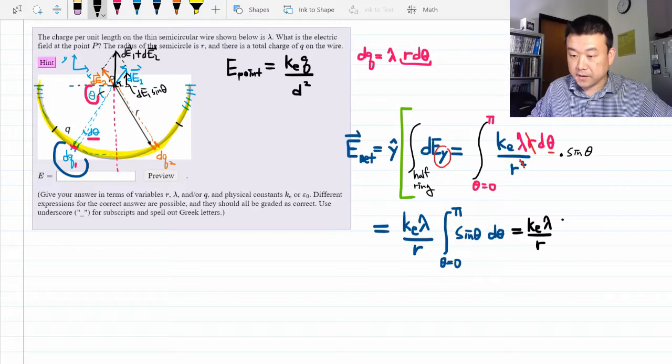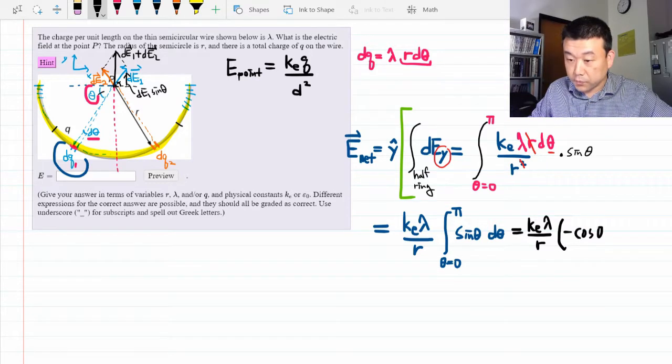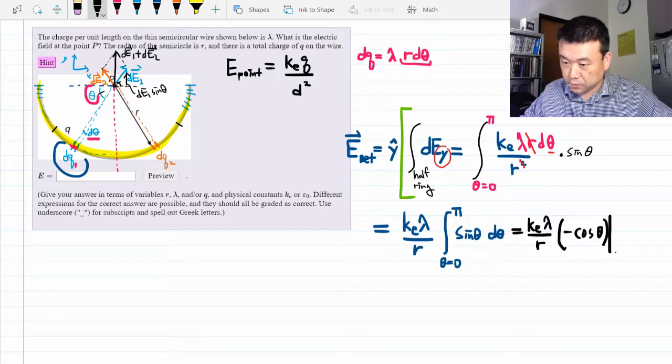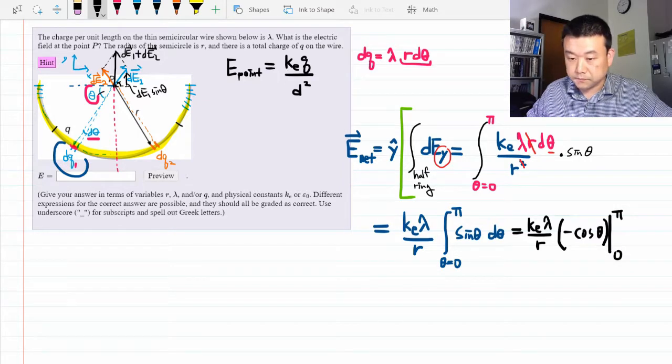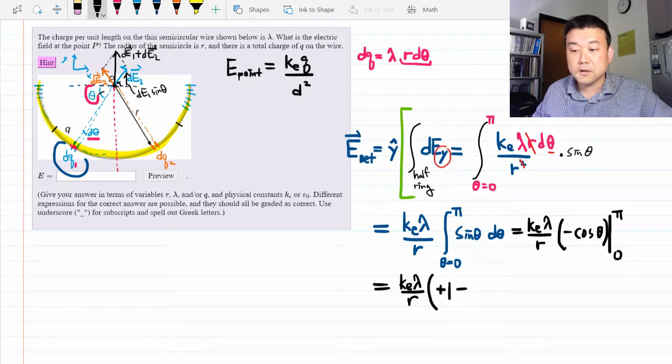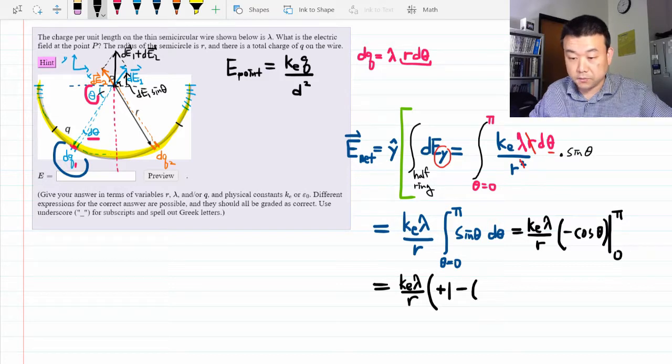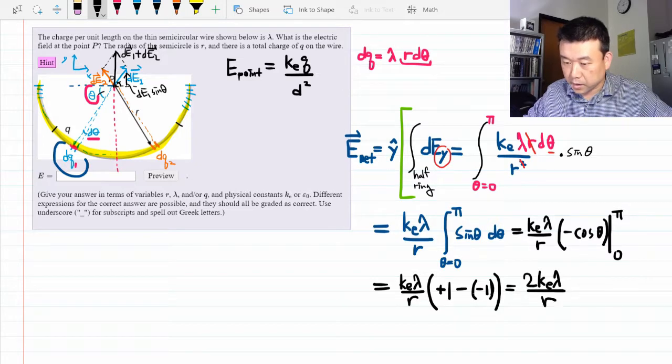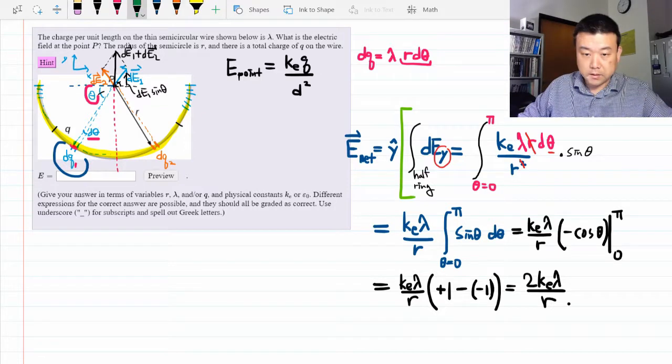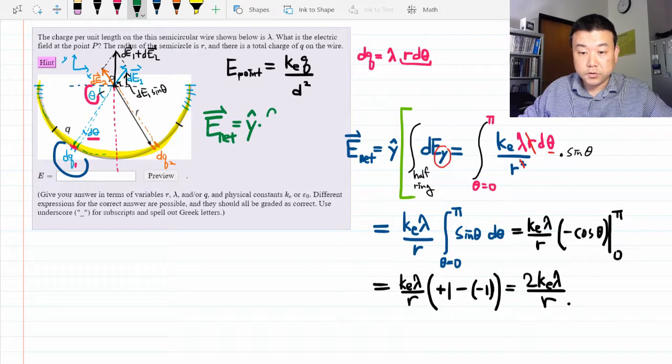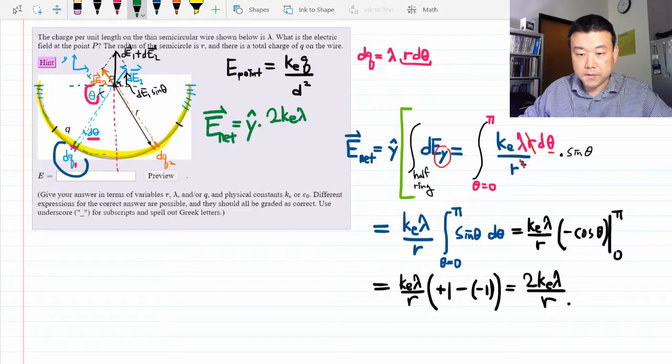The antiderivative of sine is minus cosine. You can always double check your antiderivative by taking the derivative. See if you get the same thing back. And the limits go from 0 to pi. So evaluating at the limit, plug in pi, you get minus 1. So minus minus 1 would be plus 1, minus. Plug in 0, you get 1. So minus 1. Oh, so it's just 2. 2 ke lambda over r. So that's our electric field. The net electric field is in the y direction with the magnitude 2 ke lambda over r.